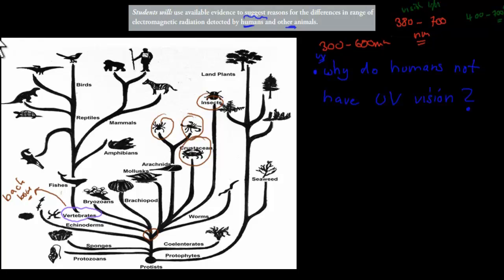But what we find interesting is most or all insects have UV vision. Most birds, or all birds actually, have UV vision. There are even some reptiles that have UV vision, the gecko was one example.